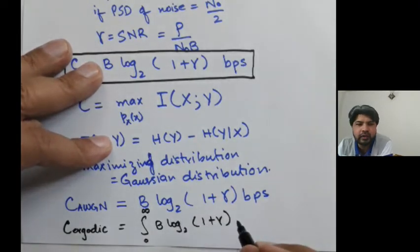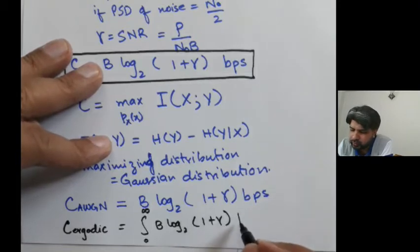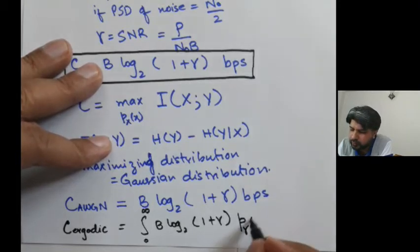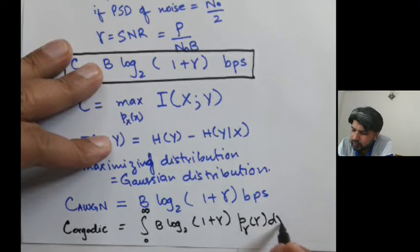And then you would average it out over the fading distribution of gamma, p of gamma d gamma.